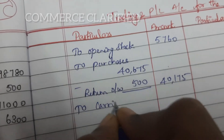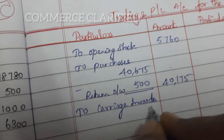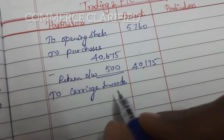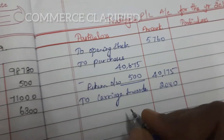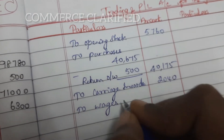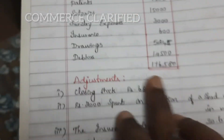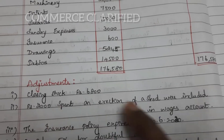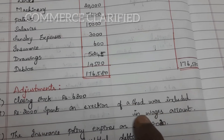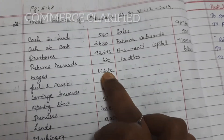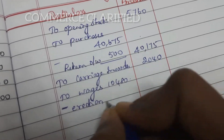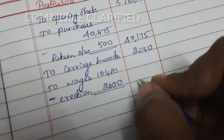Next item: carriage inwards — this is a direct expense, meaning transportation charges for bringing in raw materials, so it's a direct expense of 2,040. Next, wages — the trial balance shows wages as 10,480. But from the adjustment, 2,000 spent on erection of a shed was included in wages. Since erection charges should go to premises, we deduct 2,000 from wages. So wages in the outer column becomes 10,480 minus 2,000 equals 8,480.